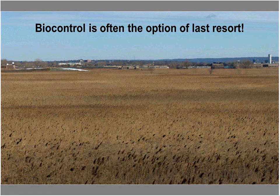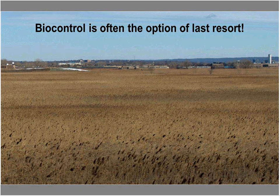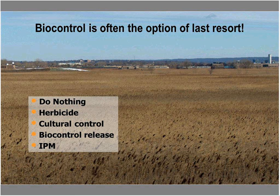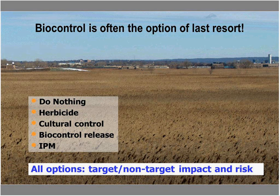Biocontrol is often the optional last resort — and I want to emphasize that. When you're dealing with a problem like Phragmites or dog strangling vine that's been here for a long time and gone through a population growth phase covering the landscape, it's going to take time for anything to work, including biocontrol. You have a couple of options: do nothing, use herbicide, use cultural control like pulling the weed, use biocontrol, or some combination in an IPM strategy.